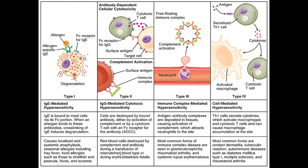An example of Type 2 hypersensitivity is mismatched blood transfusion — if you give A-positive blood to a B-positive patient, it will destroy the blood cells. Type 3 is immune complex-mediated hypersensitivity. The drug binds with antibodies forming an antigen-antibody complex, which deposits in blood vessels and stimulates neutrophils, activating macrophages and mast cells that release humoral mediators. It occurs in glomerulonephritis, rheumatoid arthritis, and systemic lupus erythematosus.